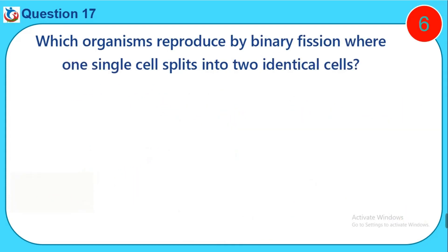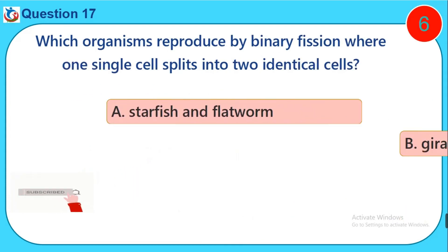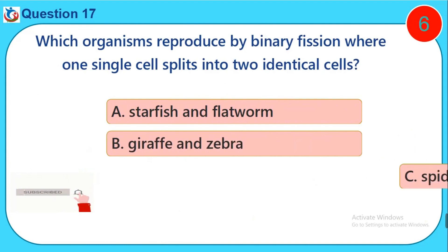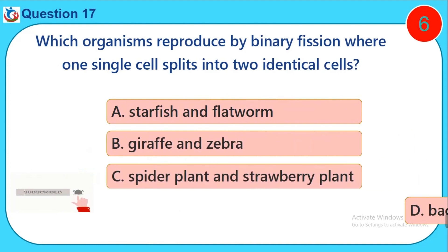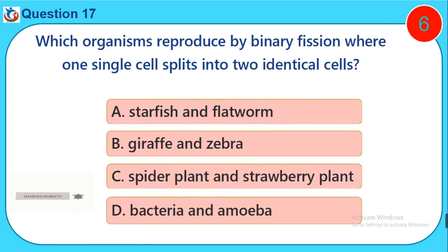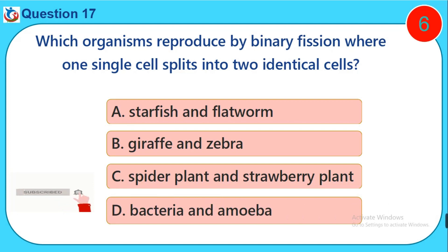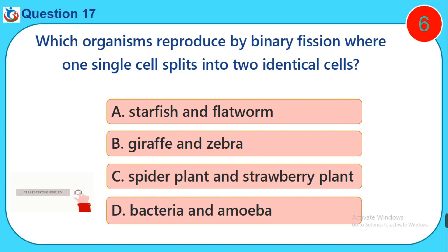Question seventeen: Which organisms reproduce by binary fission, where one single cell splits into two identical cells? A) Starfish and flatworm, B) Giraffe and zebra, C) Spider plant and strawberry plant, D) Bacteria.